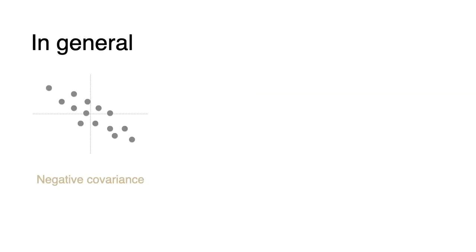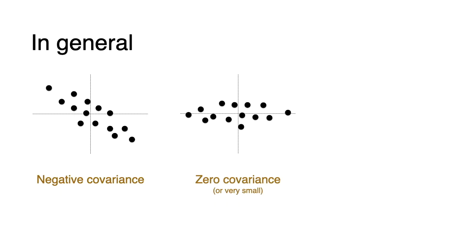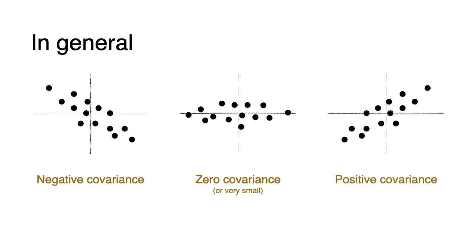In general, if you have a dataset like a backwards diagonal, it has a negative covariance. If it doesn't skew in any diagonal, it has zero covariance or a very small number. Datasets going in the positive diagonal have positive covariance. If you're thinking about correlation — covariance and correlation are very similar, not the exact same formula but very similar. So on the left the variables are negatively correlated, in the middle they're uncorrelated or independent, and on the right they are positively correlated, because as x increases, y also increases.